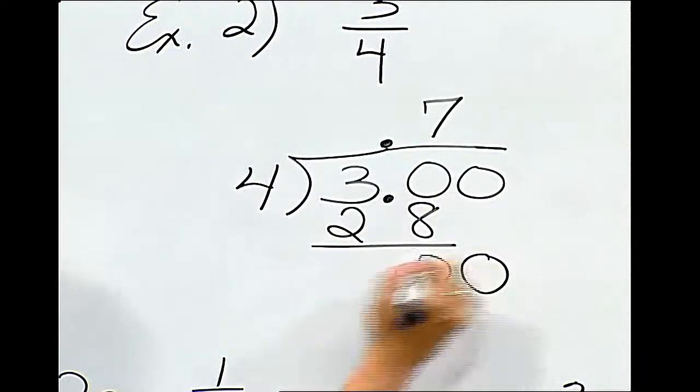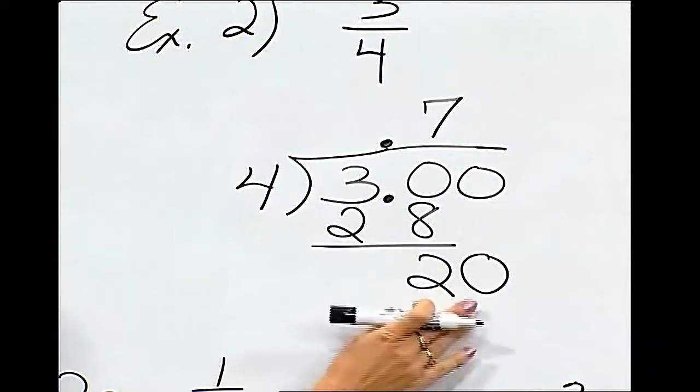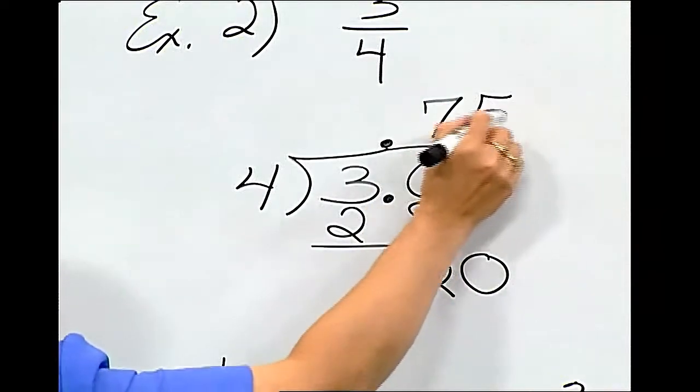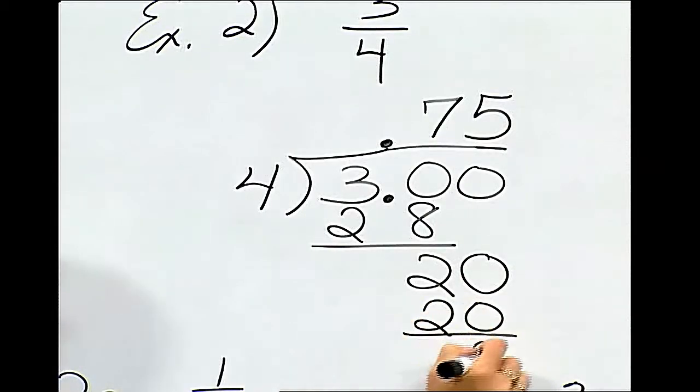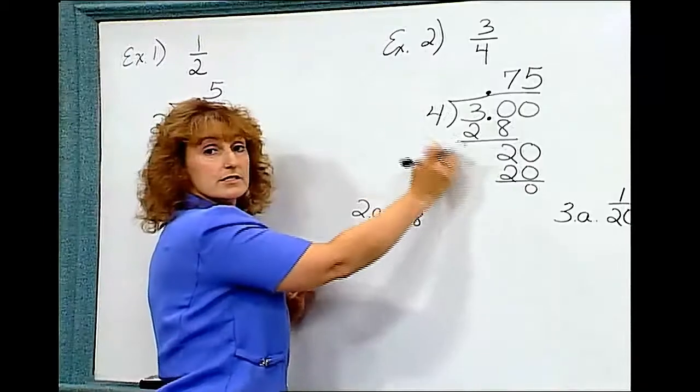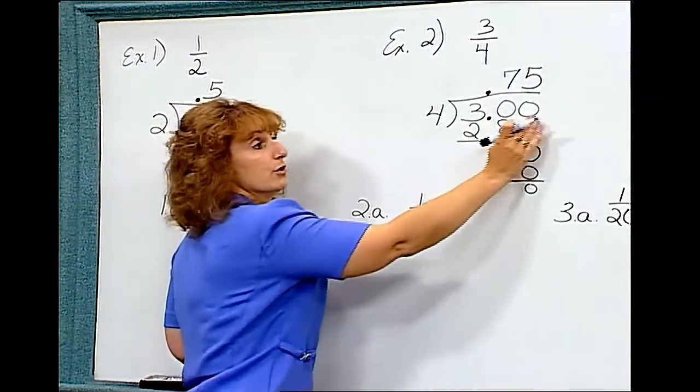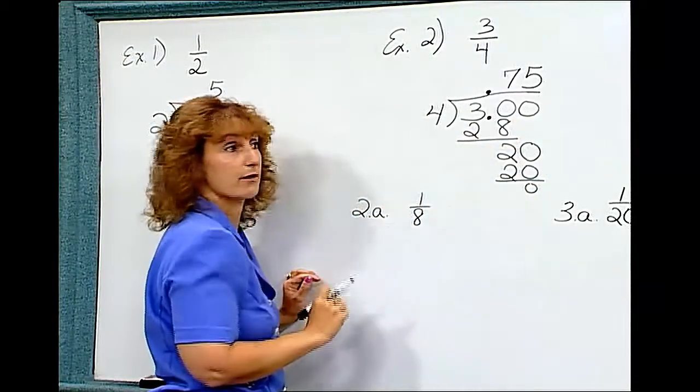Bring down the 0. 4 goes into 20 5 times. 5 times 4 is 20. We get no remainder. If you continue to get a remainder, you may place more 0s at the end to bring down.